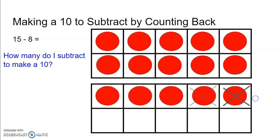So 1, 2, 3, 4, 5. 15 minus 5 equals 10. So I've already subtracted 5 circles.